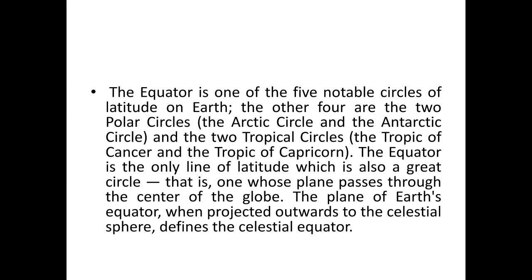The equator is one of the five notable circles of latitudes on Earth. The other four are the two polar circles — the Arctic Circle and the Antarctic Circle — and the two tropical circles pertaining to the Tropic of Cancer and the Tropic of Capricorn. The equator is the only line of latitude which is also a great circle, that is, one whose plane passes through the center of the globe.